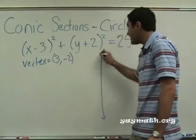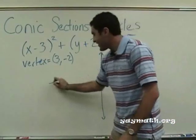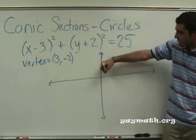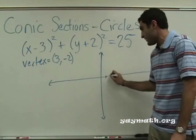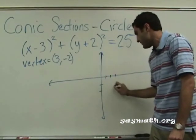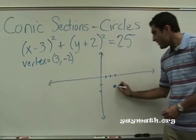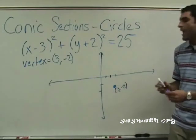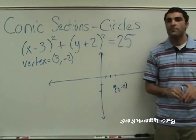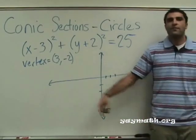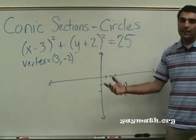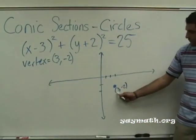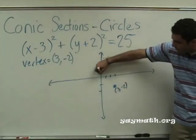Where do we start? The vertex. That's a great place to start. 1, 2, 3, negative 2. So, there's 3, negative 2, and radius of 5. What do you think? Let's go up 5, down 5, left 5, right 5. Let's do them all. Up 5, from 3, negative 2. Up 5. Where is that point?